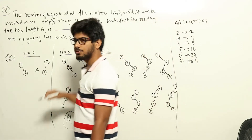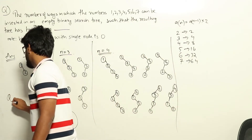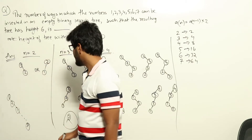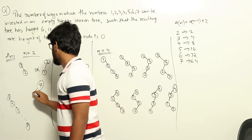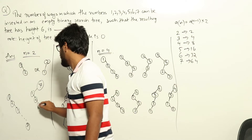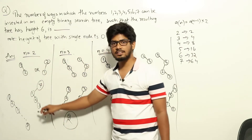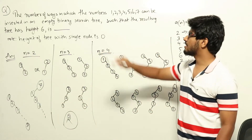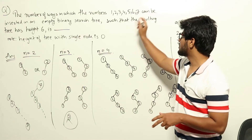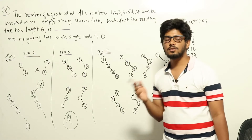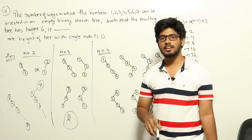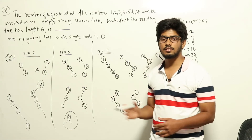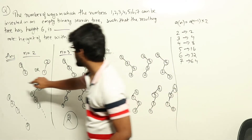For example, adding 1, 2, 3, 4, 5, 6, 7 in order produces one chain. Another example: adding 7 first, then 1, 2, 3, etc. In all such cases, each node has exactly one child. These are examples of chains. To solve this for n=7, I will first solve for smaller values of n and find a pattern.